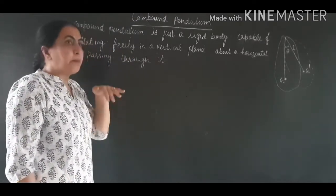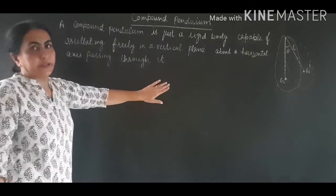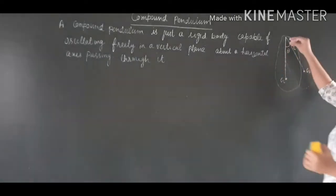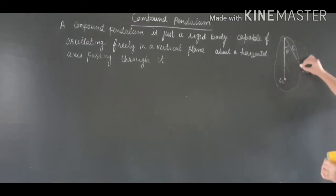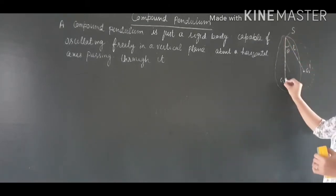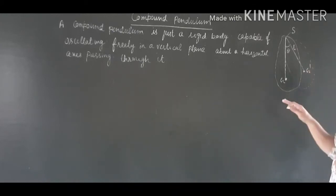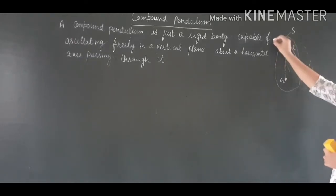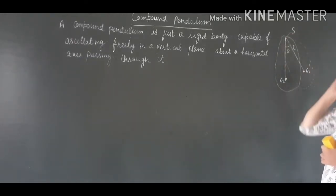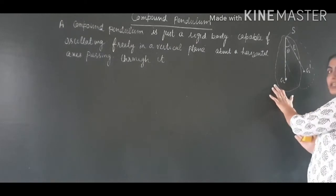The rigid body is capable of oscillating freely in a vertical plane about a horizontal axis passing through it. If this is a rigid body, this point is the point of suspension S, this is the center of gravity G, and this rigid body is oscillating in a vertical plane about a horizontal axis.